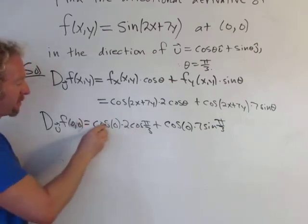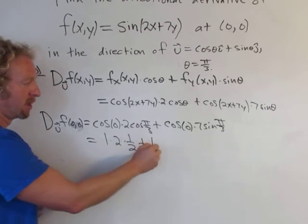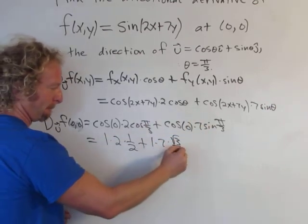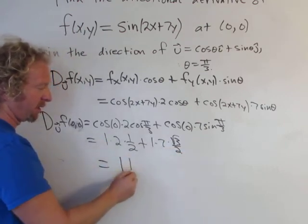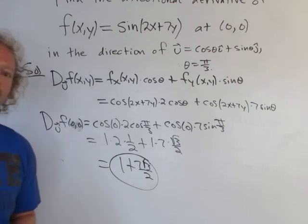Cosine of π over 3 is 1/2, cosine of 0 is 1, so this is 1 times 2 times 1/2, plus 1 times 7. Sine of π over 3 is the square root of 3 over 2. So we end up with 1 plus 7 square root of 3 over 2. And that's how you find the directional derivative. That's it.